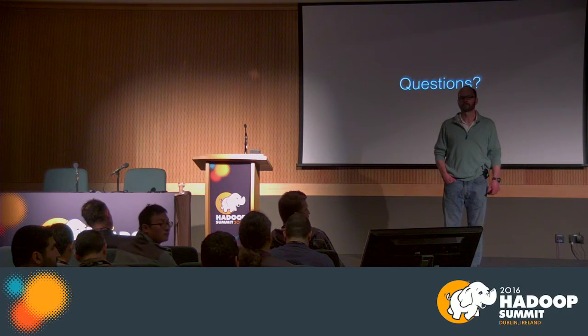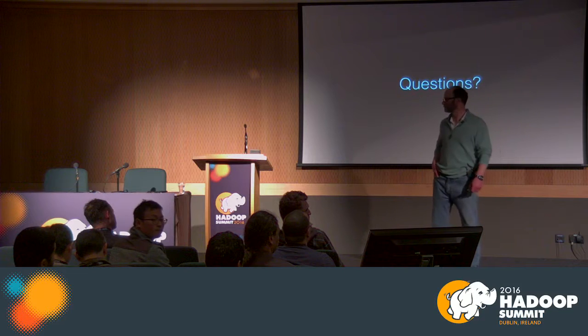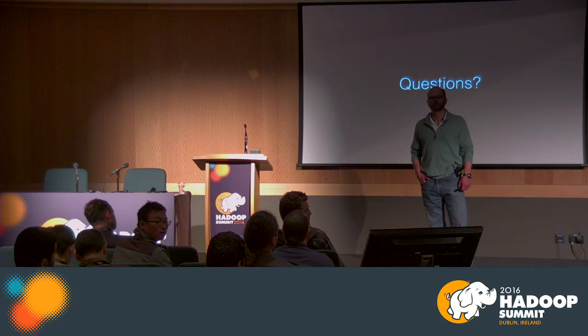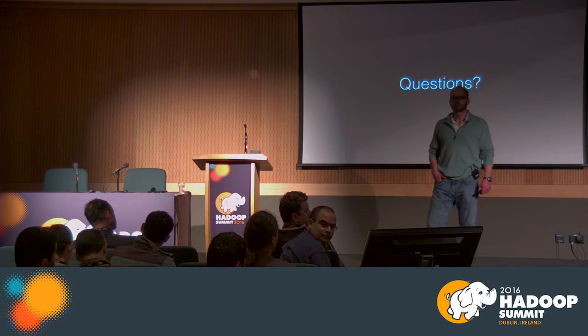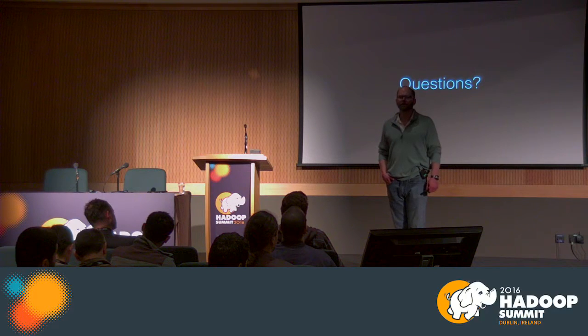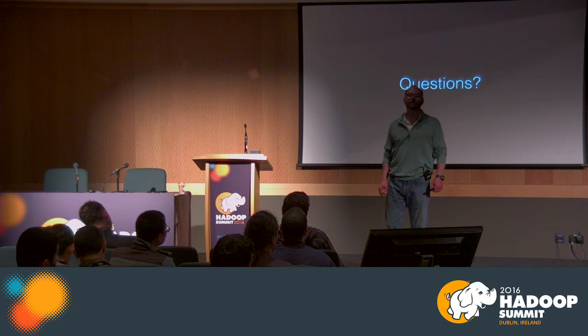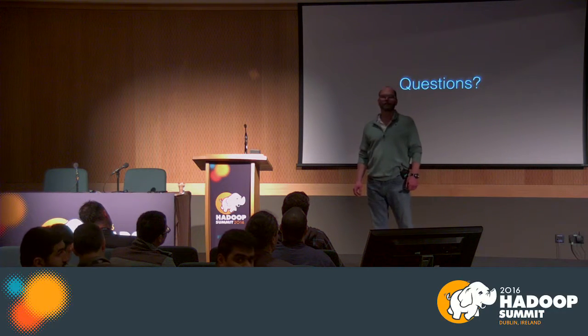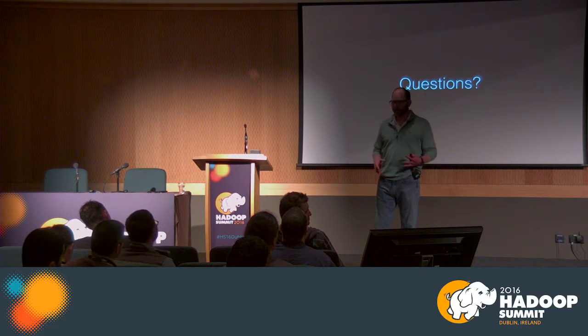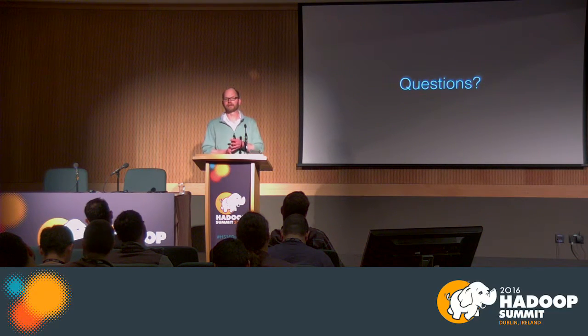Q: What are the selling points of Storm versus Flink? A: One is that Storm has been around a lot longer — Flink is still relatively young. Another selling point is the security story, and also depending on your use case, being able to balance throughput and low latency, plus integration with external services. From feedback from customers, it's easier to balance throughput and latency in Storm than in Flink.